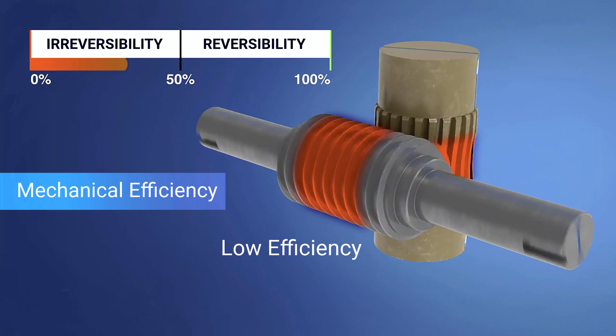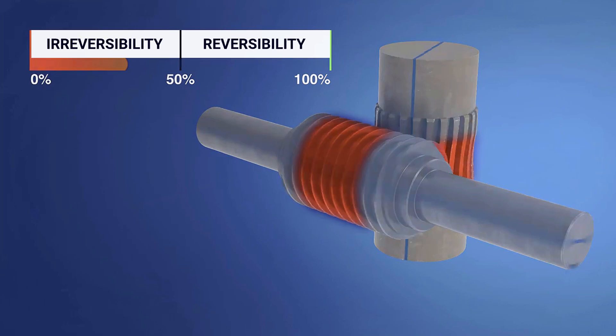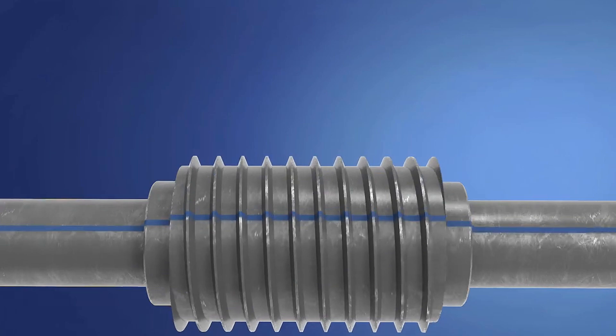For this reason, screw jacks have a high wear rate. To overcome this, special combinations of steel and bronze are used during the production process so that only the bronze parts of the worm gear mechanism can be replaced.